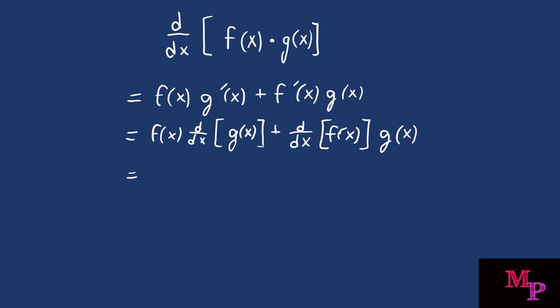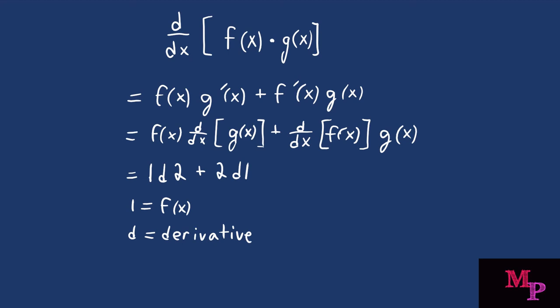A helpful mnemonic to memorize this rule is: 1d2 plus 2d1 — where 1 equals your first function f(x), d represents derivative, and 2 represents your second function g(x). So 1d2 plus 2d1 means: first function times derivative of second function, plus second function times derivative of first function.